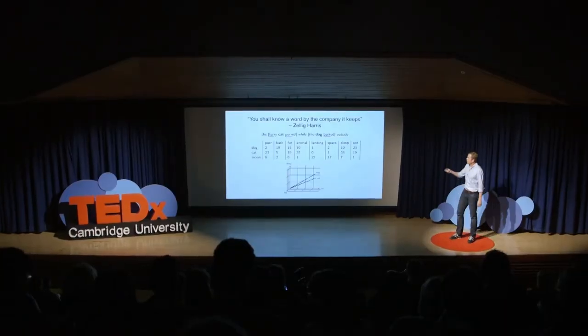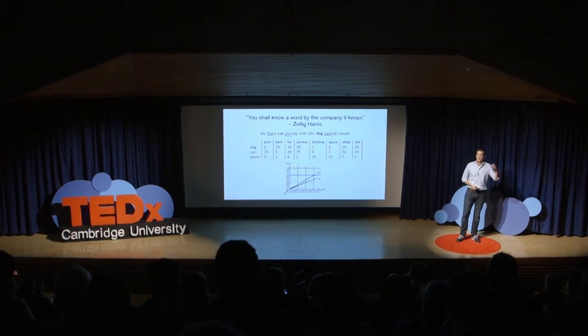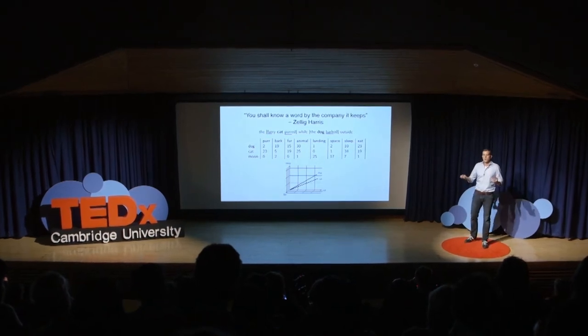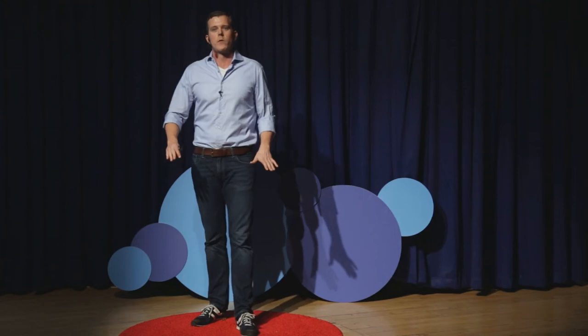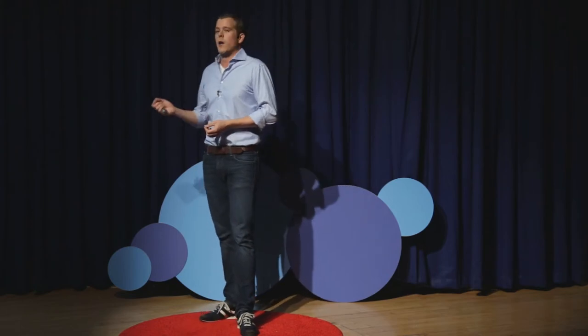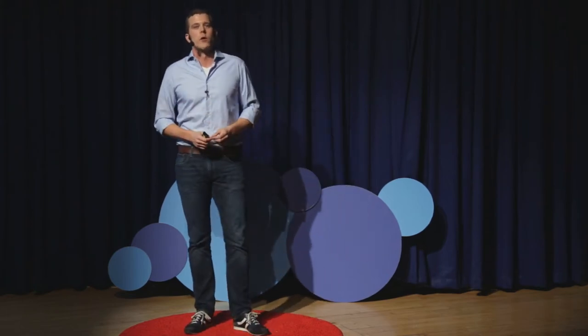We take a large corpus of text — let's say Wikipedia — and if we want to know the meaning of 'cat' and 'dog,' we look at all the occurrences of these words in Wikipedia and look at the company they keep. We can see that 'cat' co-occurs very often with 'fur' and 'purr,' and 'dog' co-occurs with 'bark.' Adding up all these counts, we construct something called a vector space model, which allows us to see how similar two things are. So dog and cat are closer to each other in meaning than they are to 'moon,' because they occur in more similar contexts.